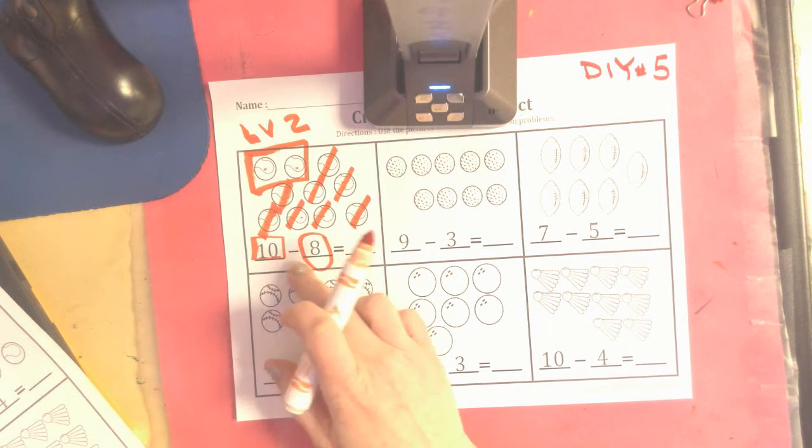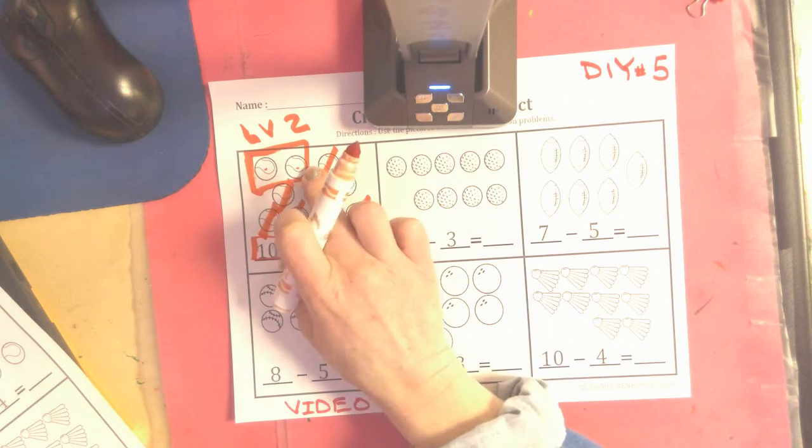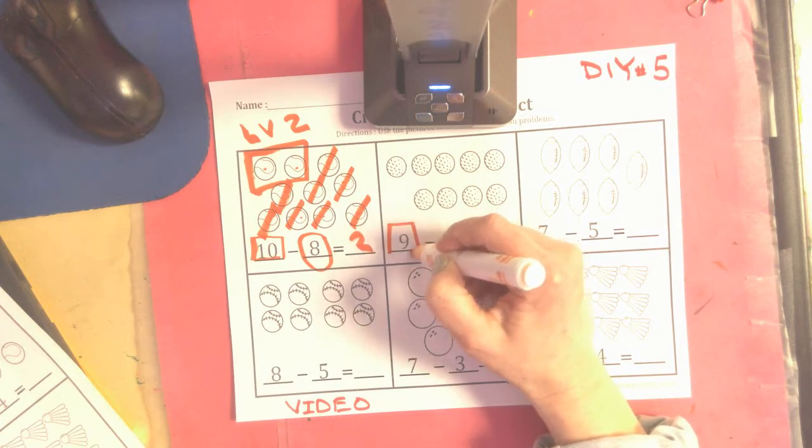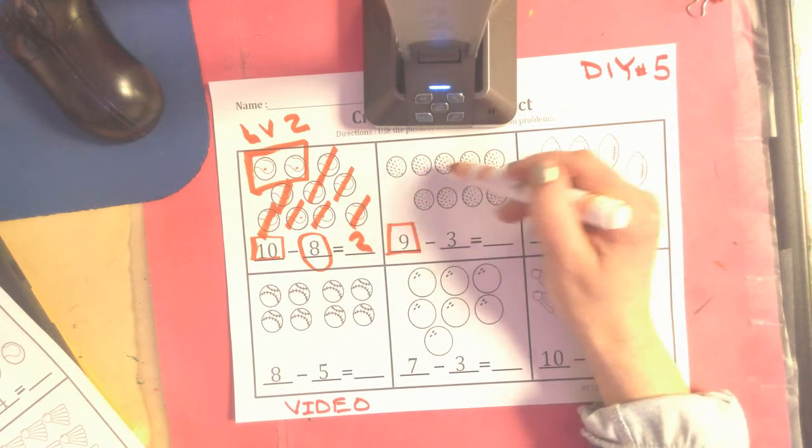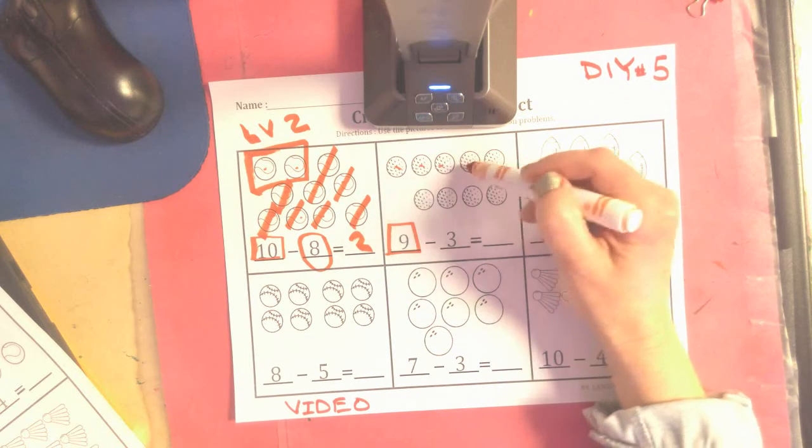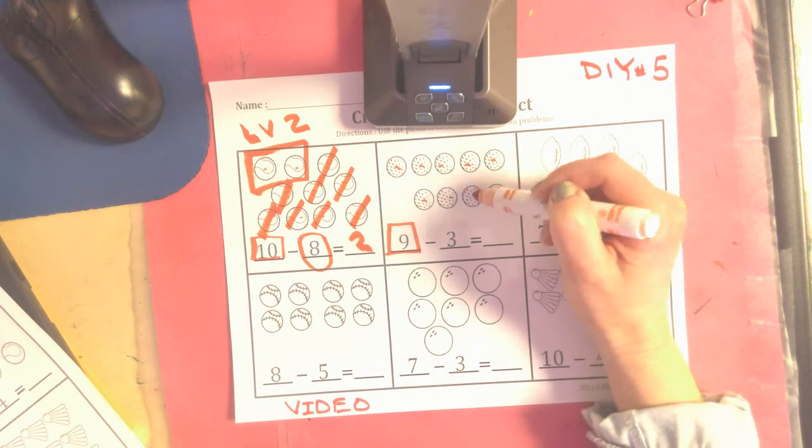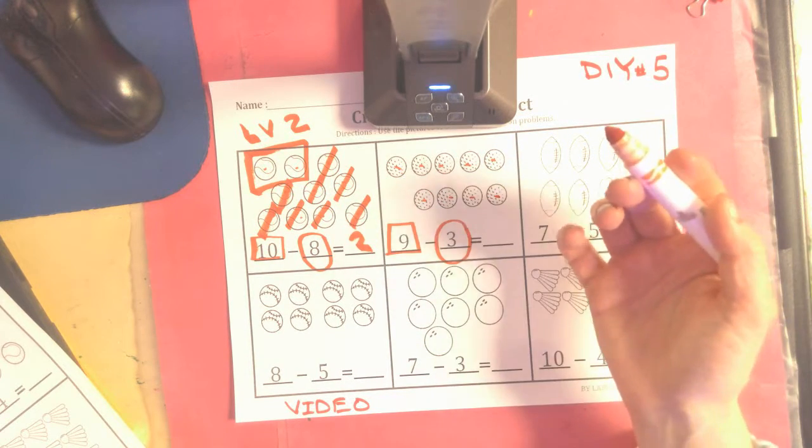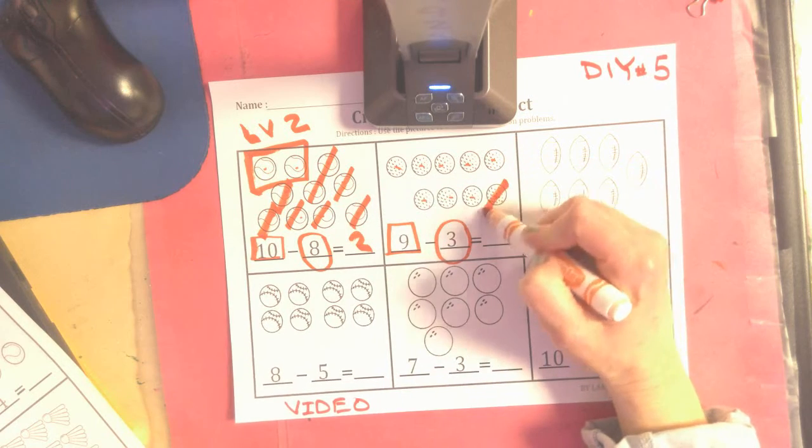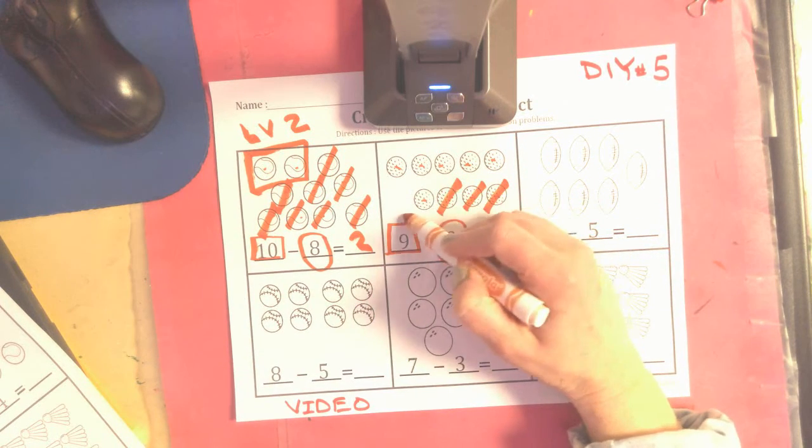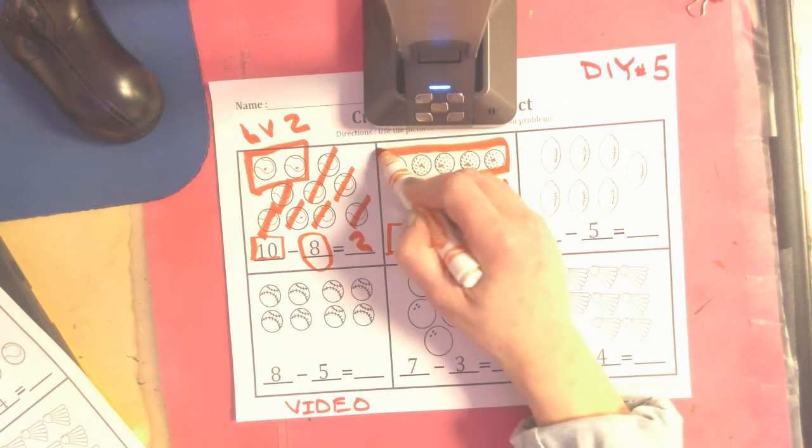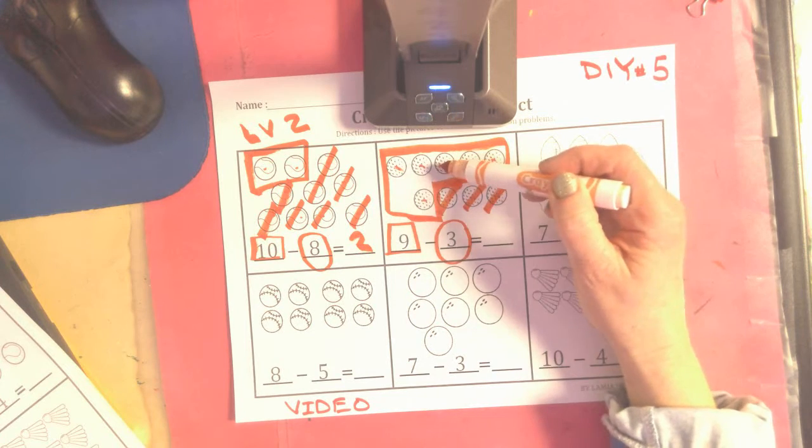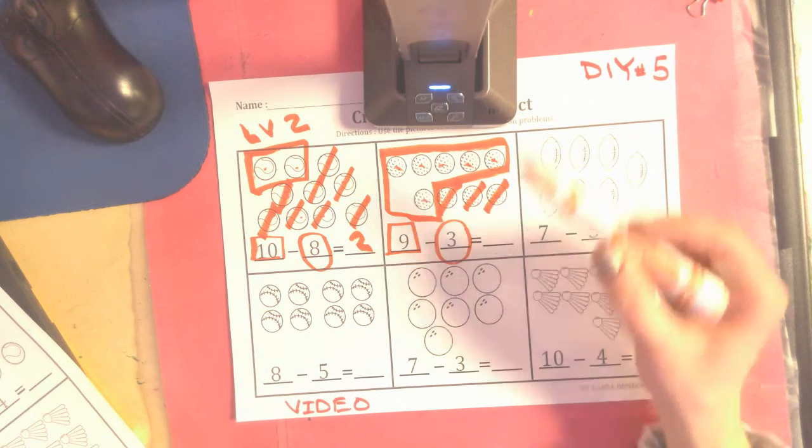Let's try this one together. Again, my start number is 9, and oh how nice - they've already drawn 9 golf balls for us: 1, 2, 3, 4, 5, 6, 7, 8, 9. Okay, there's my mark out number. I need to show subtracting 3 by marking out 3: 1, 2, 3. I like to put a little box around what's left over. Let's count to see what's left: 1, 2, 3, 4, 5, 6. 9 minus 3 equals 6.